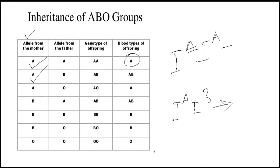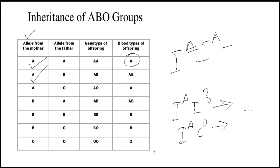In the third case, the mother has provided dominant A and the father has provided the recessive gene O. A will be expressed and O will be suppressed, so the blood group of the child will be A. But the child will be carrying a recessive gene for blood group O.